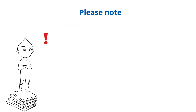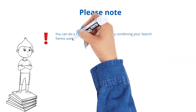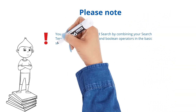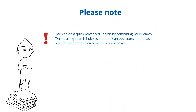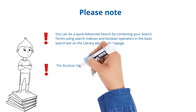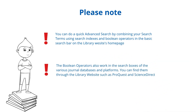Please note that you can do a quick advanced search by combining your search terms using search indexes and boolean operators in the basic search bar on the library website's homepage. The boolean operators also work in the search boxes of the various journal databases and platforms, such as ProQuest and ScienceDirect, which you can find through the library website.